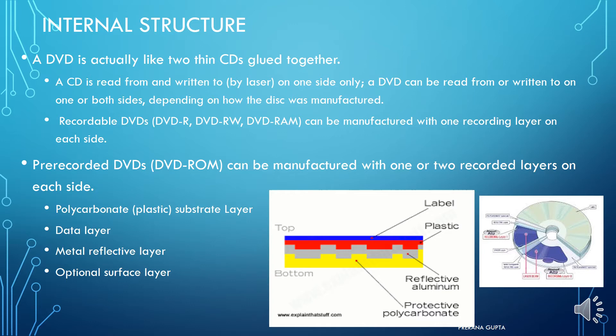The materials used to make a DVD include a polycarbonate plastic substrate layer at the bottom, shown in yellow. The grey layer is reflective aluminum, the red layer is polycarbonate substrate, and the blue layer is the labeling layer. This represents the structure of a single-sided DVD.